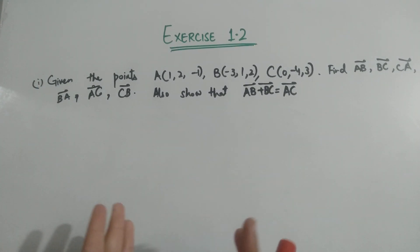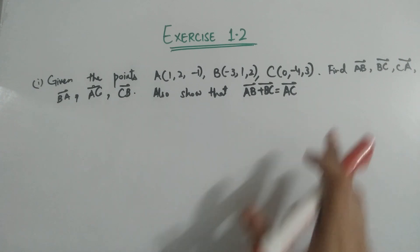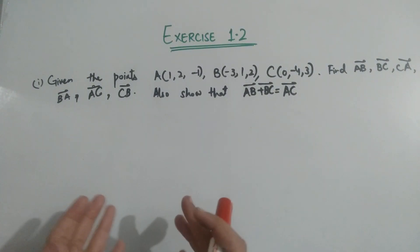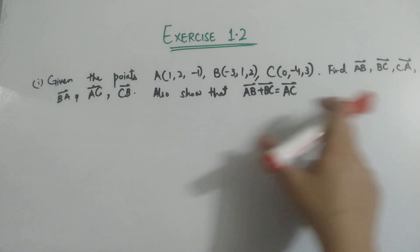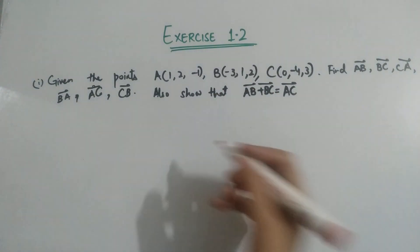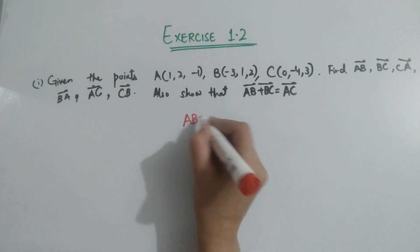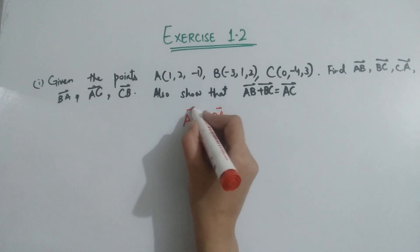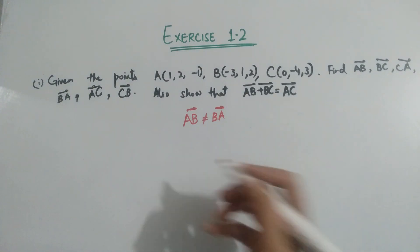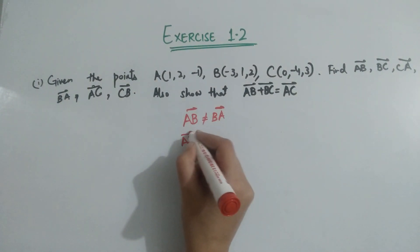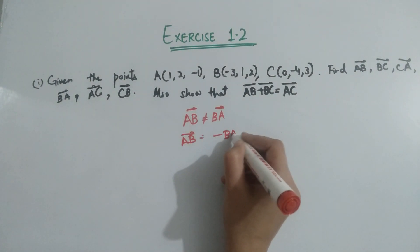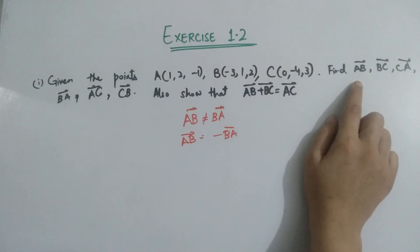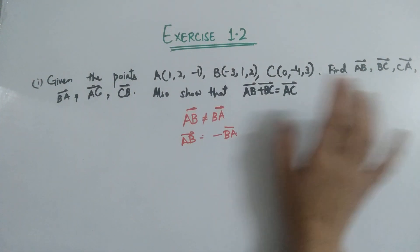You have to find AB, BC, CA, BA, AC, and CB. Note that AB and BA are not equal — the difference between two vectors is not commutative. But you can write AB equal to minus BA. By using this relation, if you find AB you can automatically find BA.